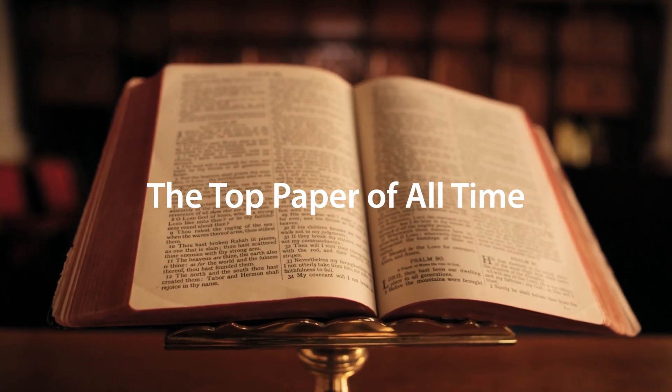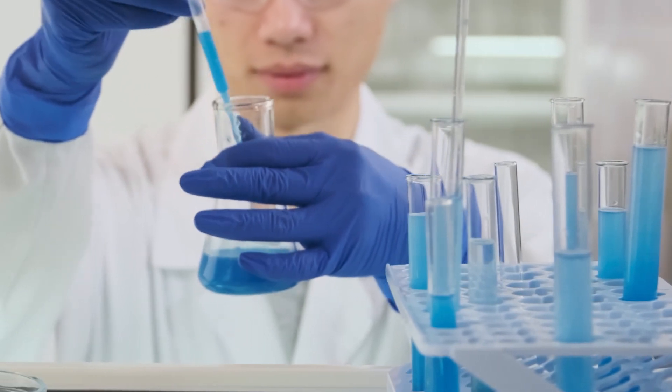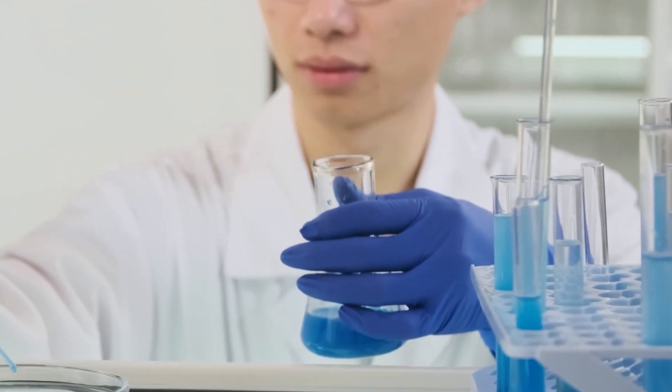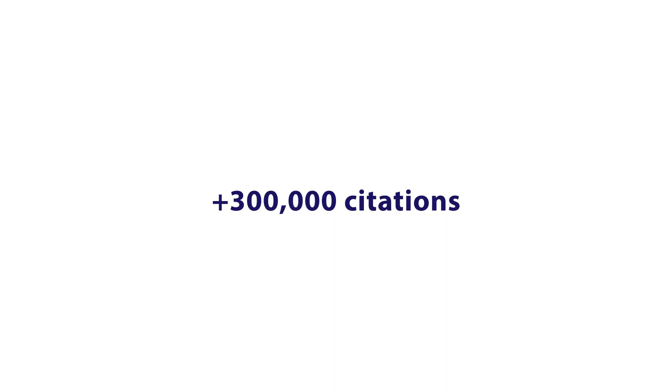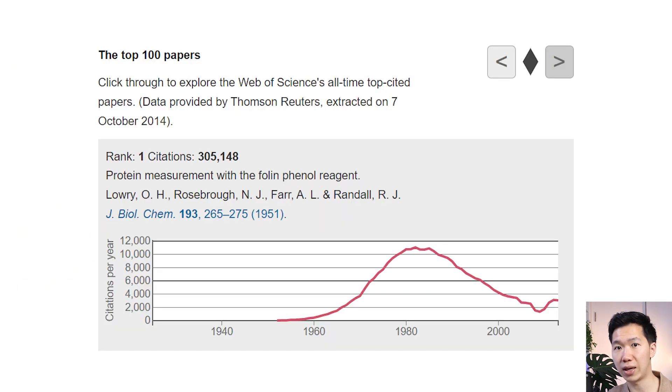Hello, scientists! We are going to look at the top scientific paper of all time. This is not a paper that was written by any of the Nobel Prize winners. It is actually a paper about a protein measuring assay, the Lowry assay. If you have ever worked with protein research, then you probably have used this assay. It will turn your protein solution into a very beautiful blue color. The original paper of its methodology has over 300,000 citations, and a newsletter published by Nature in 2014 ranked this paper as the most cited paper of all time.